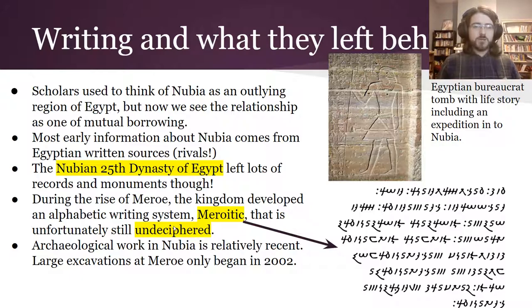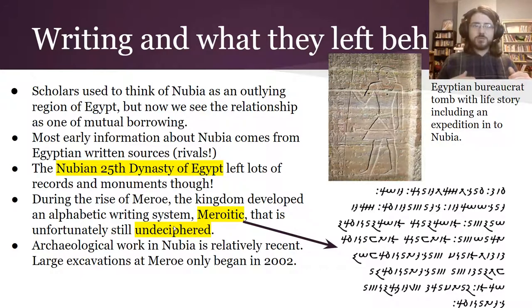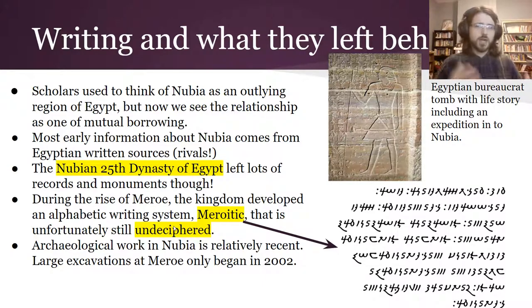Lots of early information about Nubia still comes from those written Egyptian sources. They fought each other — they were rivals — and Egypt occupied Nubia for a very long time. So you have to be cautious about how you interpret sources about Nubia that are from Egypt. Especially when interpreting primary sources, you have to be suspicious of what the Egyptians are saying and why. For example, here you see a picture from a tomb of an Egyptian bureaucrat with his life story, including an expedition to Nubia — even mid-level people were getting in on this.